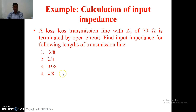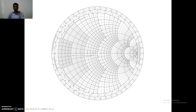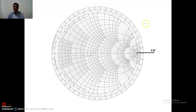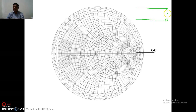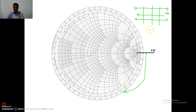For this calculation, we have two key points on the Smith chart: the short circuit point where impedance is 0, and the open circuit point where impedance is infinite. For this case, we have the transmission line terminated in open circuit, so the load impedance is infinite. We are calculating the input impedance for different lengths by traveling in the clockwise direction toward the generator on the Smith chart for each case.